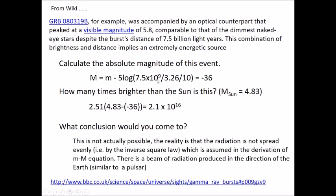There is a beam of radiation produced in the direction of the Earth, similar to a pulsar. The radiation is not spread out in different and equal in all directions as the inverse square law suggests. If we happen to pass through that beam, we detect it. There's a much more energetic source than it would be if it was given out light or gamma rays equal in all directions.